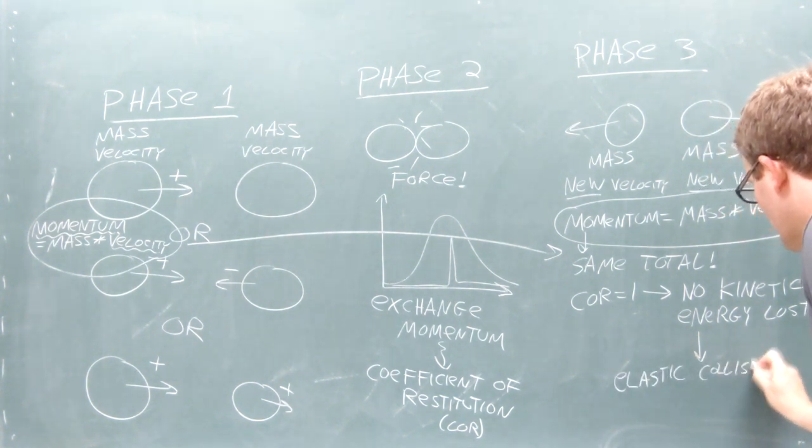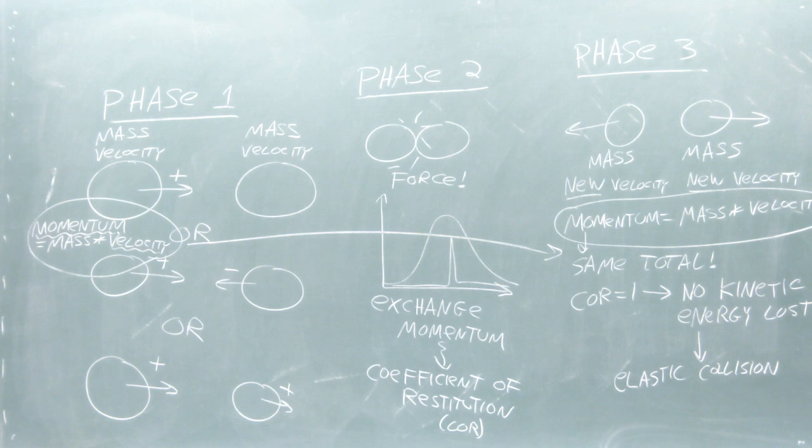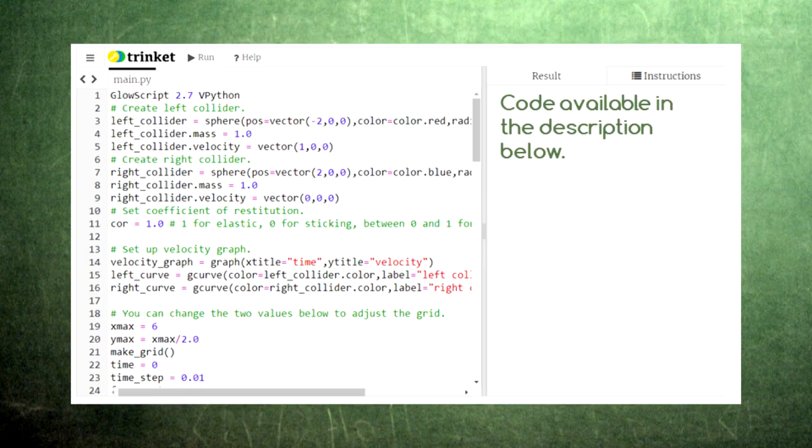An elastic collision can happen when two colliders interact without touching, like two carts with repelling magnets or two subatomic particles with the same charge.